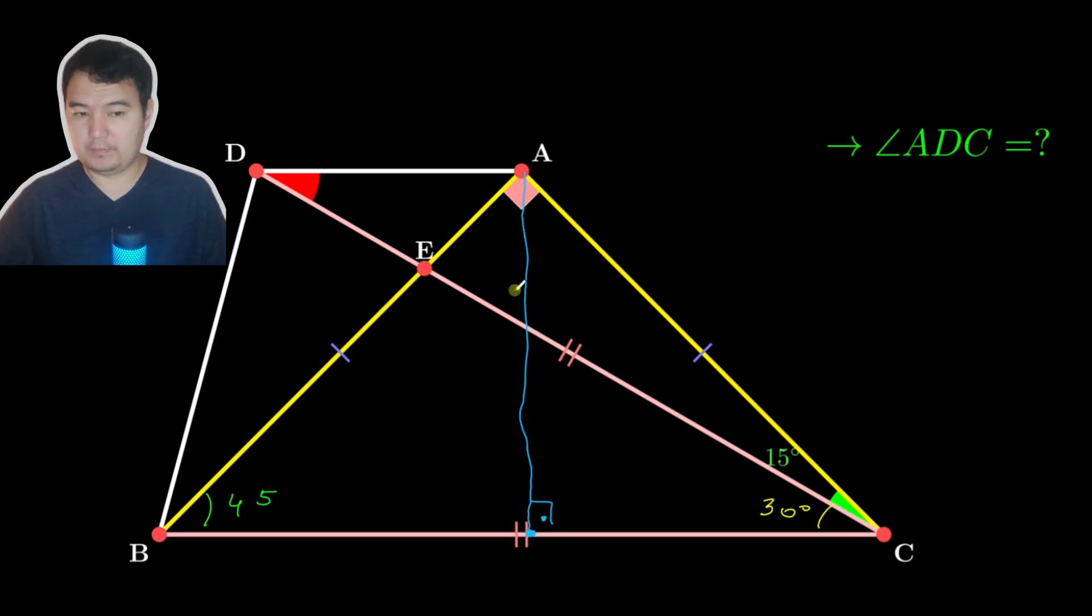Since this is the perpendicular of an isosceles-right triangle, let's say this is X, this is X, and this one is also going to be X. This is very simple.